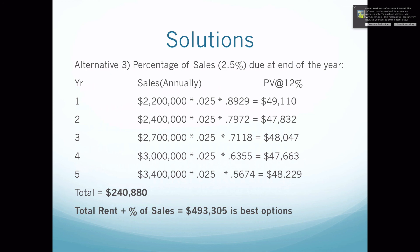So the best alternative is to pay $5,500 a month and hold the 2.5% of sales until the end of the year. At $493,305, it is significantly lower than the other two alternatives.